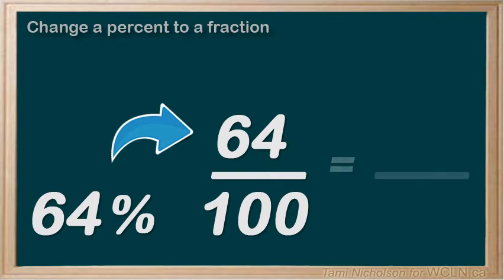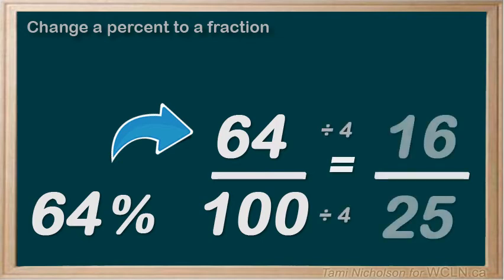Often, questions will ask you to reduce your answer to its simplest form. You need to find the greatest common factor. In this case, it's 4. Divide the top and bottom by 4. And you have 16 twenty-fifths. Done!